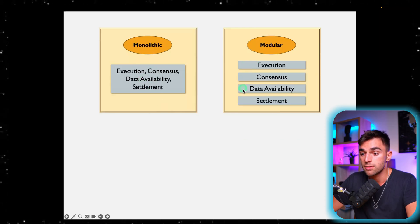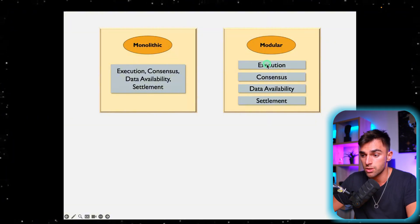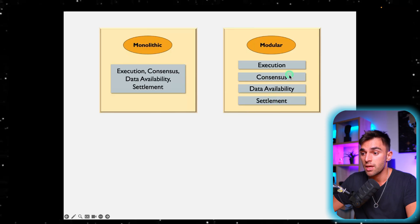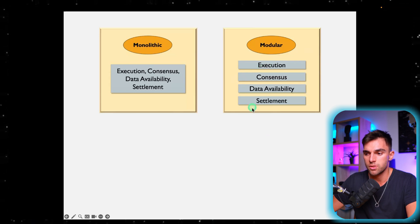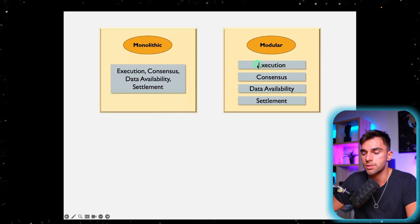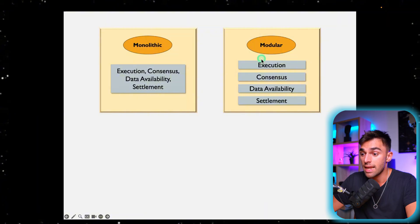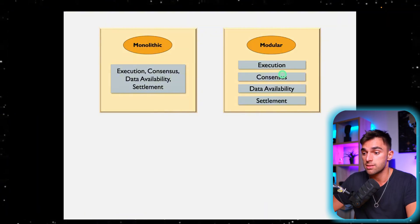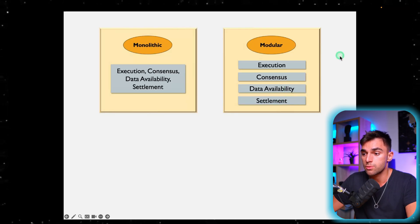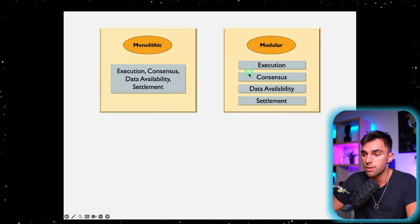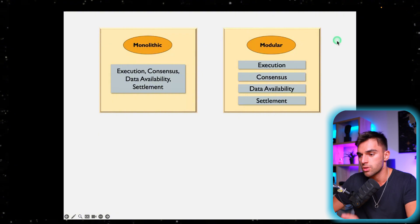Modular blockchains are a little different in that they've broken up these functions — execution, consensus, data availability, and settlement — into different layers. Not all of these are necessarily separated. If we look at Arbitrum, for example, the Layer 2 handles the execution of a transaction, but it still relies on the Layer 1 — the Ethereum mainnet — for consensus, data availability, and settlement. So different modular blockchains will have different designs, with some specializing execution on a different layer and others combining functions.